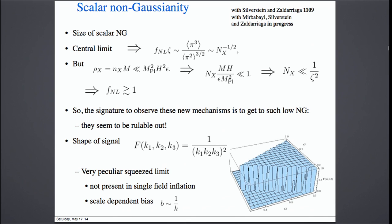The shape of the non-Gaussianity is very peculiar — it's a shape not present in single-field inflation. In particular, there is a squeezed limit that leads to a scale-dependent bias of 1 over k. This is an interesting way in which we can tell that the theorem equating the measured gravity waves to the scale of inflation does not hold. But there is this new mechanism which, if you can get f_NL greater than one, is ruled out.